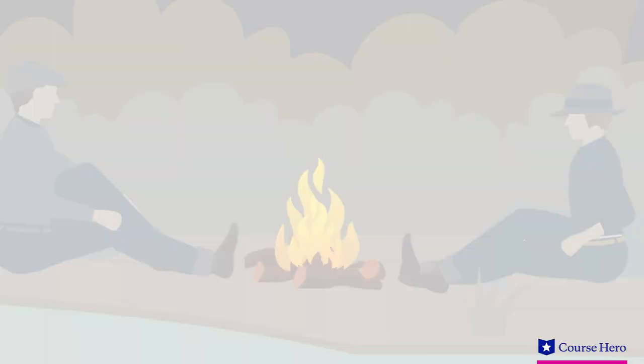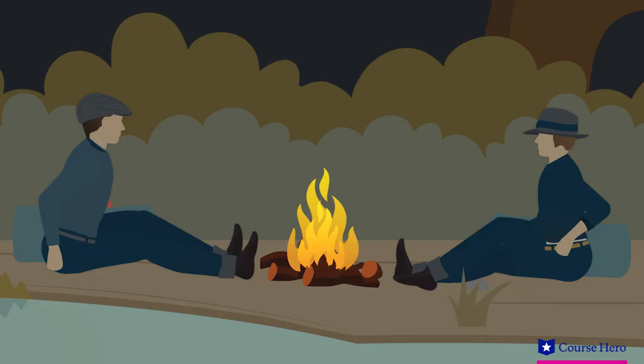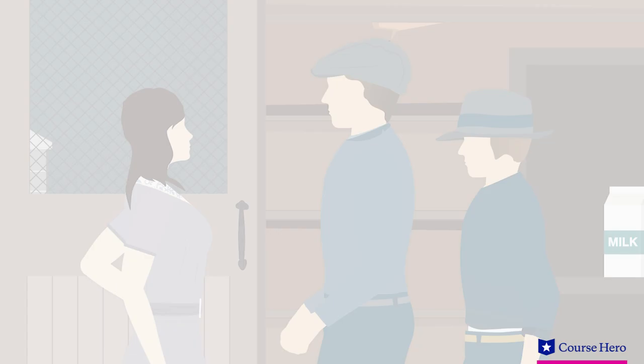The plot begins with George and Lenny sitting beside a riverbed talking about a dream of owning a small farm someday. The two go to work at a ranch and receive hostility from the boss's son, Curly. They try to stay out of trouble befriending some of the ranch's workers. Curly's wife comes around to flirt with the men who are uninterested due to her being Curly's wife.